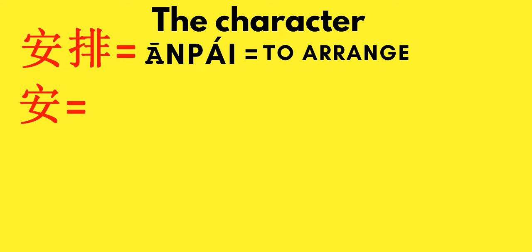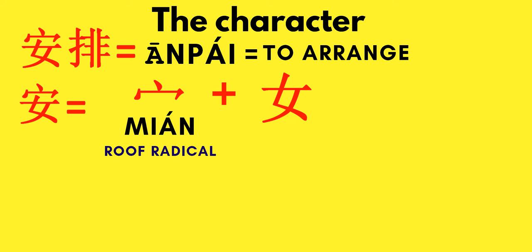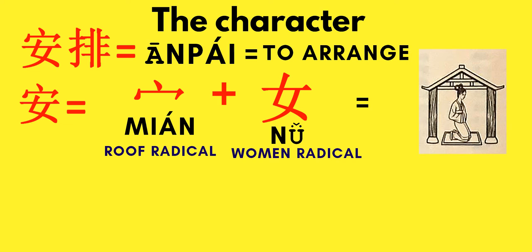So how are these two characters combined with each other? This radical is used for something that acts as a shelter or cover — it is a roof radical. It is combined with the character of a woman who is under that roof. This is 女 (nǚ), the woman radical. So this character 安 (ān) gives the picture of a woman feeling safe under the roof of her own home or house.